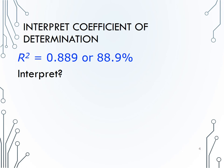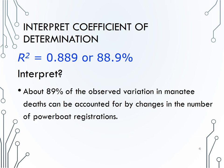Remember, the coefficient of determination is interpreted by the percent of variation in the response variable which is explained by changes in the explanatory. In this context, about 89% of the observed variation in manatee deaths can be accounted for by changes in the number of powerboat registrations.